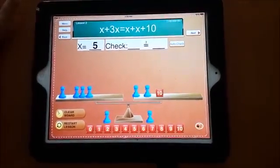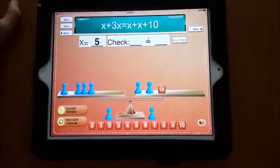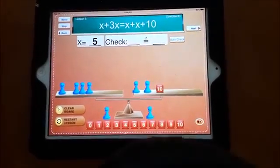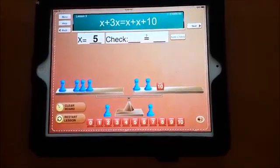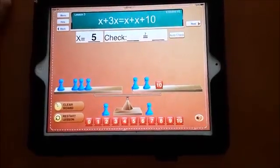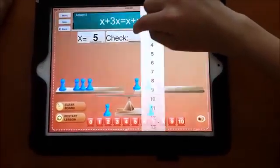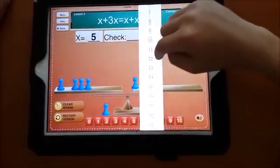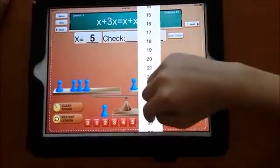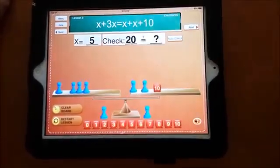Okay, let's do the check. How much is the left side worth? Five and five is 10. Five and five is 10. Five and five is 10. And 10 is 20. Okay. Click on the left side of the check. Select 20. Good.